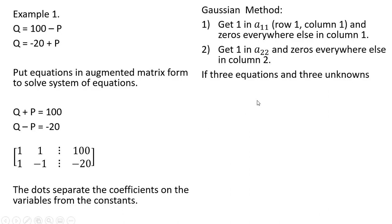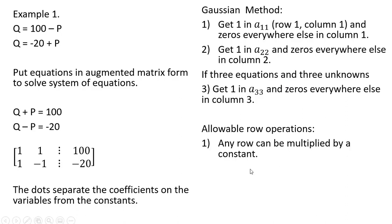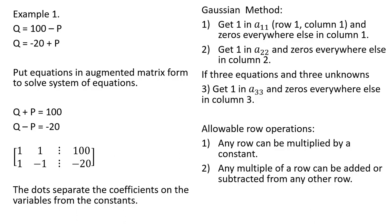Some allowable row operations — these are operations you can do to get ones where we need ones and zeros where we need zeros. Any row can be multiplied by a constant (not zero), positive or negative. And any multiple of a row can be added or subtracted from any other row. For example, we might multiply one row by two and then subtract that from another row.